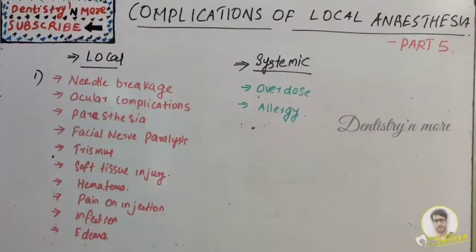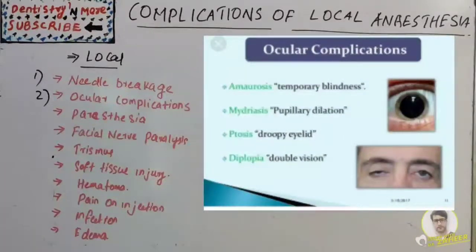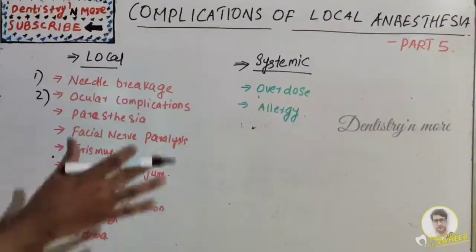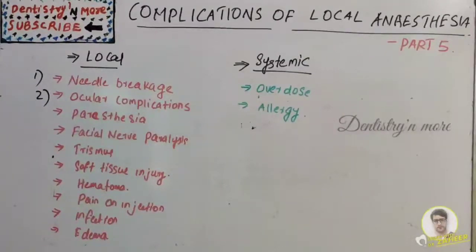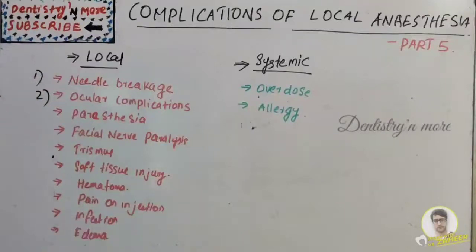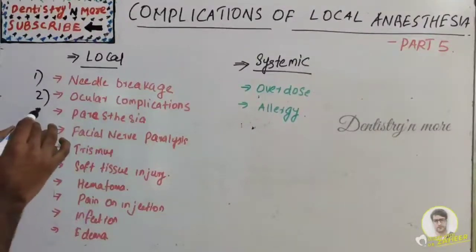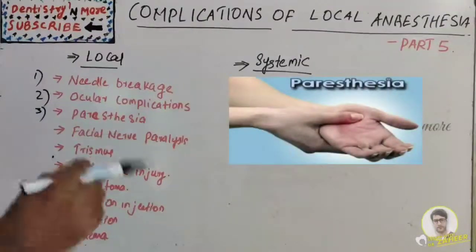The second complication is ocular complications — temporary blindness, pupillary dilation, droopy eyelid, or double vision. The cause is orbital injection through the inferior orbital fissure causing damage. Prevention involves aspirating before injection and injecting very slowly. Management includes reassuring the patient that it is transient, covering the affected eye with gauze dressing, referring to an ophthalmologist, and maintaining regular follow-up.